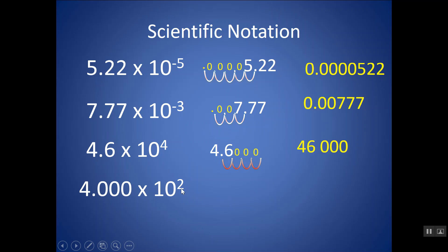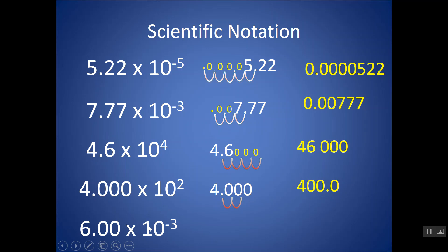4.00 times 10 to the 2 — this is a number larger than 1. We move the decimal two places to the right, giving us 400.0. That other zero is still there because it's significant — it stayed in the coefficient because it was a significant figure, and it's still present in standard notation. For the last example, a negative exponent creates a number smaller than 1, so we move the decimal to the left — 1, 2, 3 places — keeping those zeros because they are significant.